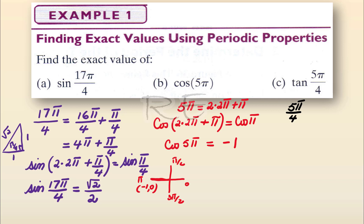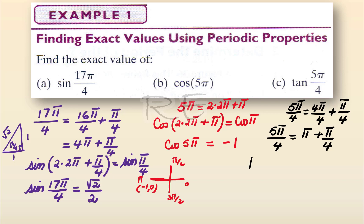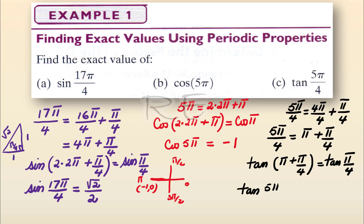5 pi over 4 is equal to 4 pi over 4 plus pi over 4, which is pi plus pi over 4. Pi is the period of tangent. So tangent of pi plus pi over 4 is equal to tangent of pi over 4. Looking at the reference triangle, tangent of pi over 4 is 1 over 1. So the answer is 1.